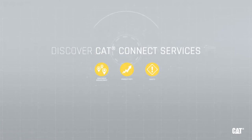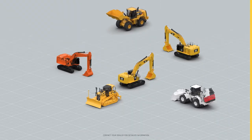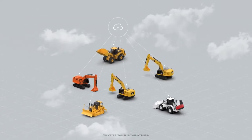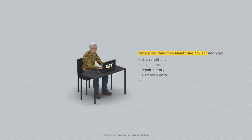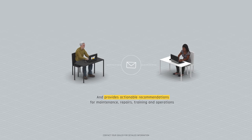The CAT Connect condition monitoring capabilities allow our advisors to remotely analyze many things about a piece of equipment, including site conditions, inspection results, repair history, electronic data, and fluid analysis results. An advisor then provides actionable recommendations for maintenance, repairs, training, and operations.